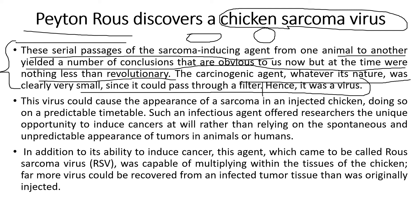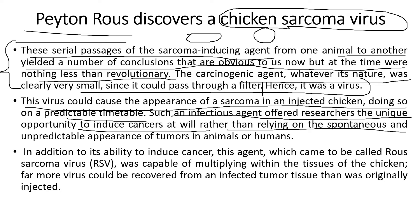It was very clear it was a virus. When a bird was infected, this virus could cause the appearance of a sarcoma in an injected chicken on a predictable timeline. Such an infectious agent offered researchers the unique opportunity to induce cancers at will, rather than relying on the spontaneous and unpredictable appearance of tumors in humans or animals. The discovery of these viruses by Peyton Rous also helped researchers and scientists study cancer effects on particular organisms.